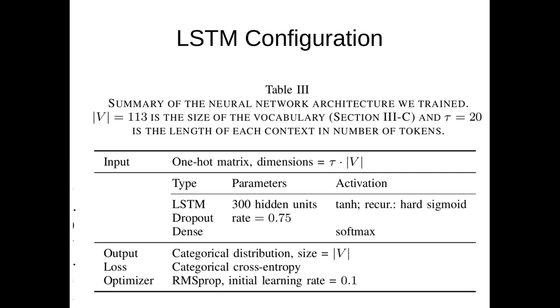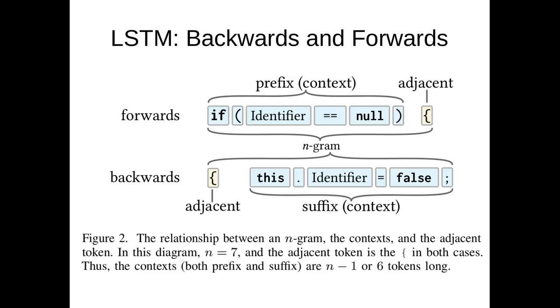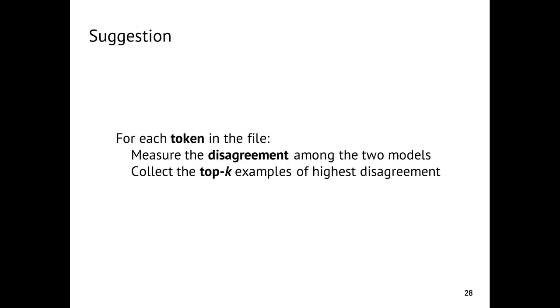Now the LSTM, we want to produce a categorical distribution of what the next thing is going to be. Our LSTM basically has—we give it 20 tokens over the vocabulary and we have 300 hidden units inside and dropout, then softmax. Its output is a categorical distribution. Our loss function is categorical cross-entropy. And we use that to estimate our function. And what we're going to do is actually train two LSTMs, a backwards and a forwards. So the forwards one will detect a suffix given a prefix, and the backwards one will detect a prefix given a suffix. And so we'll basically get two suggested tokens, and then for each token in the file we measure the disagreement. We collect the top k examples of highest disagreement and then we investigate those.